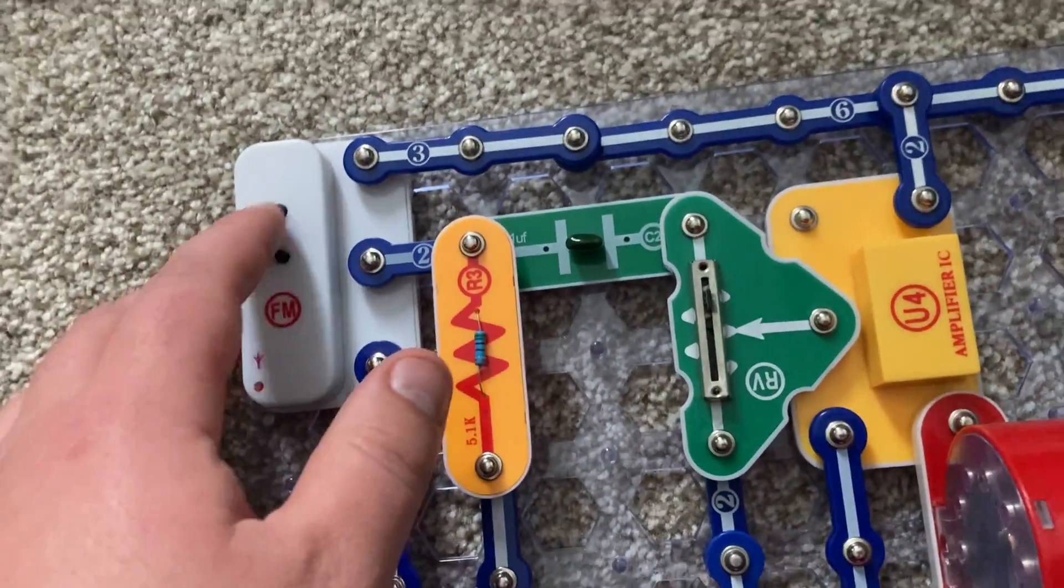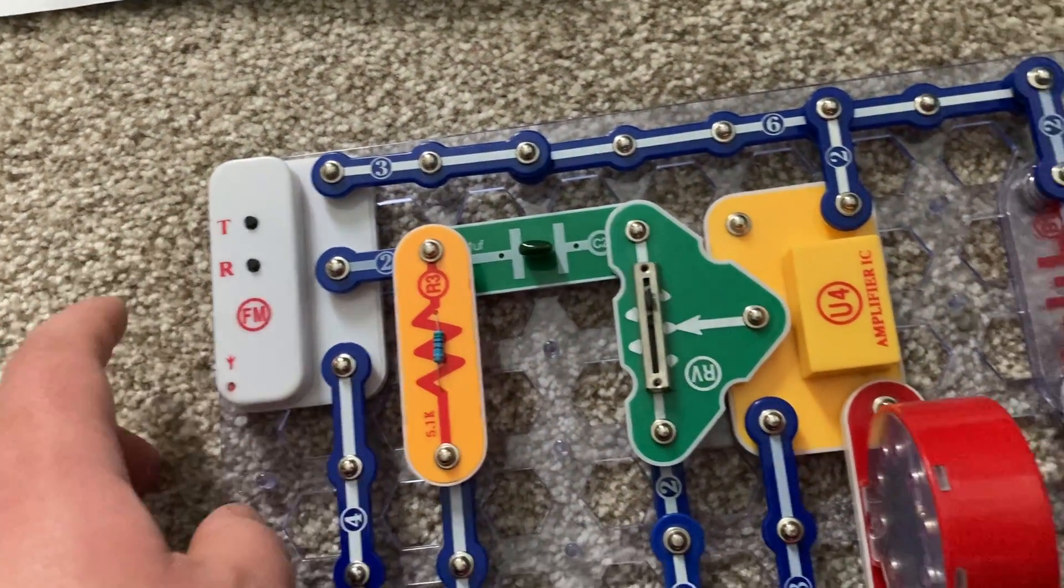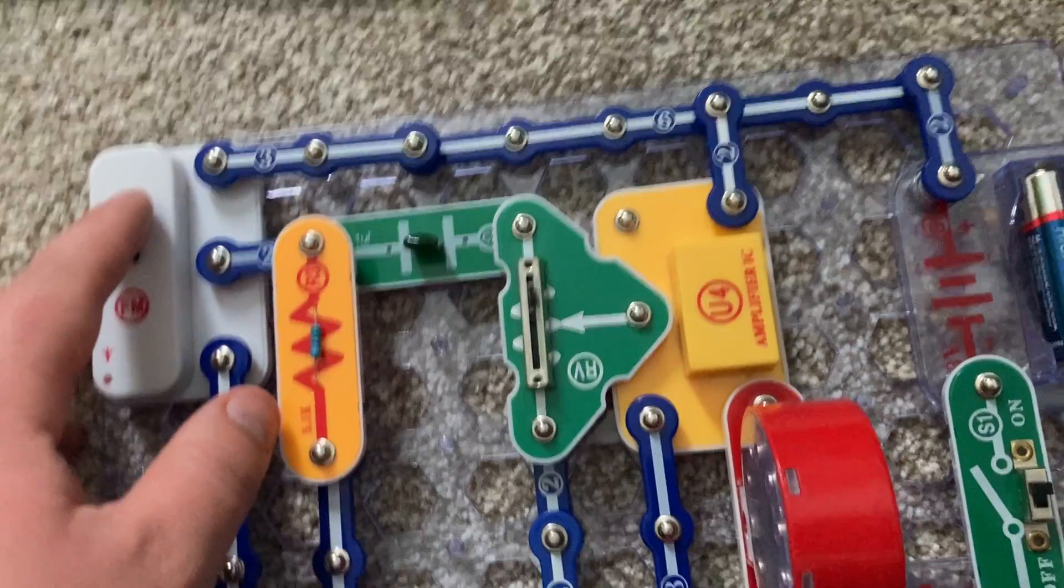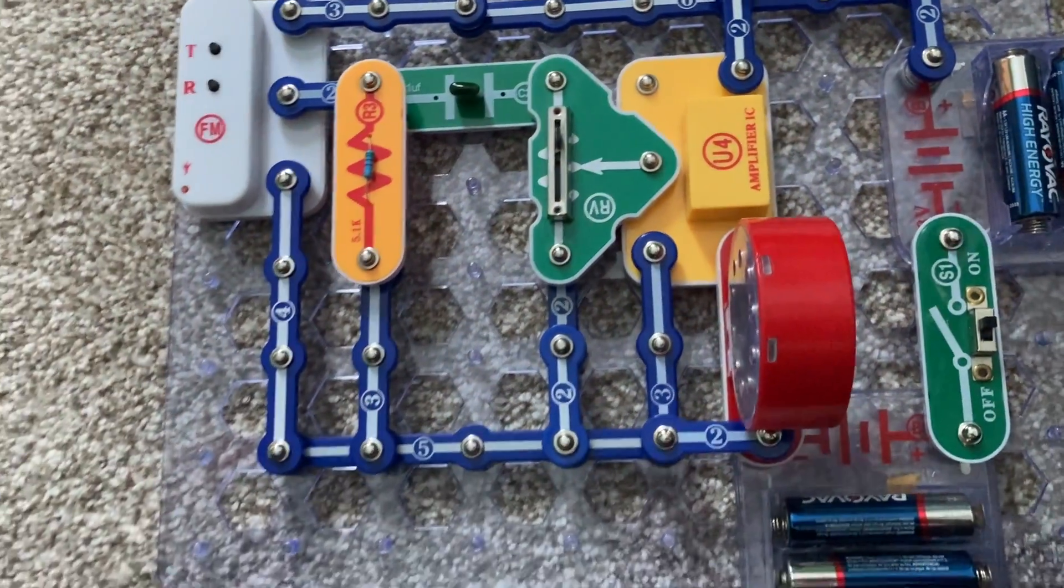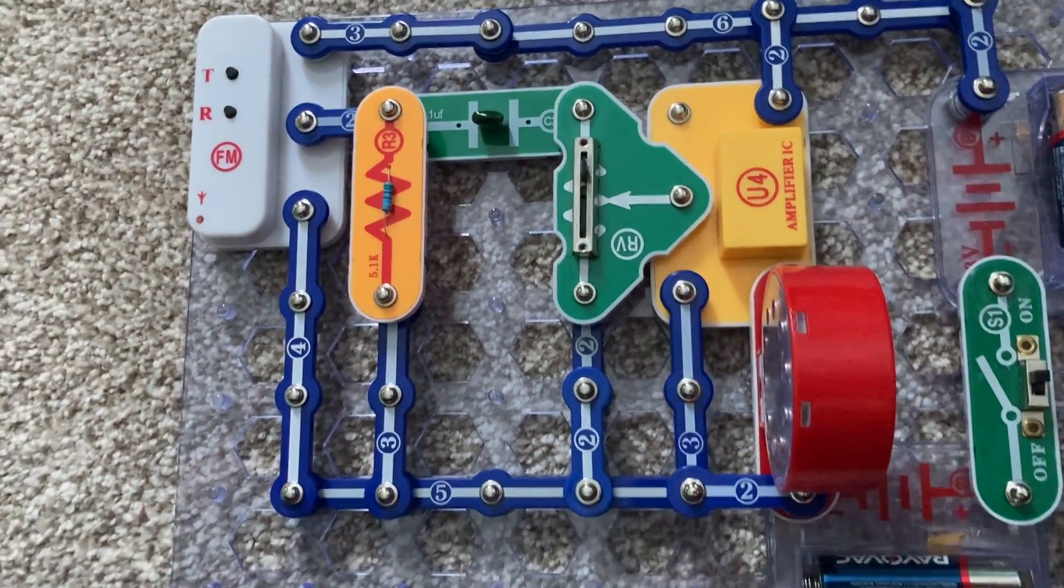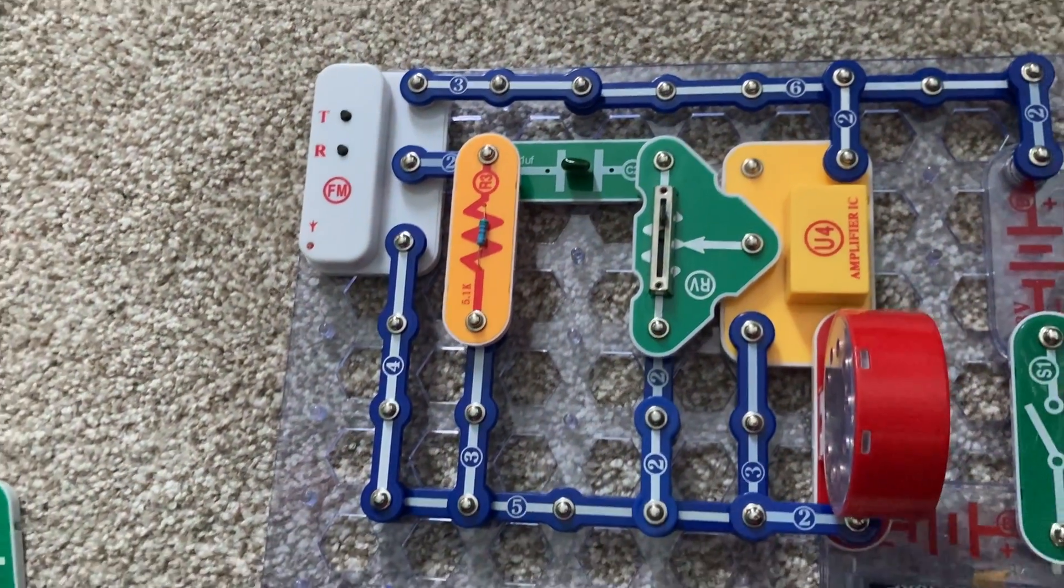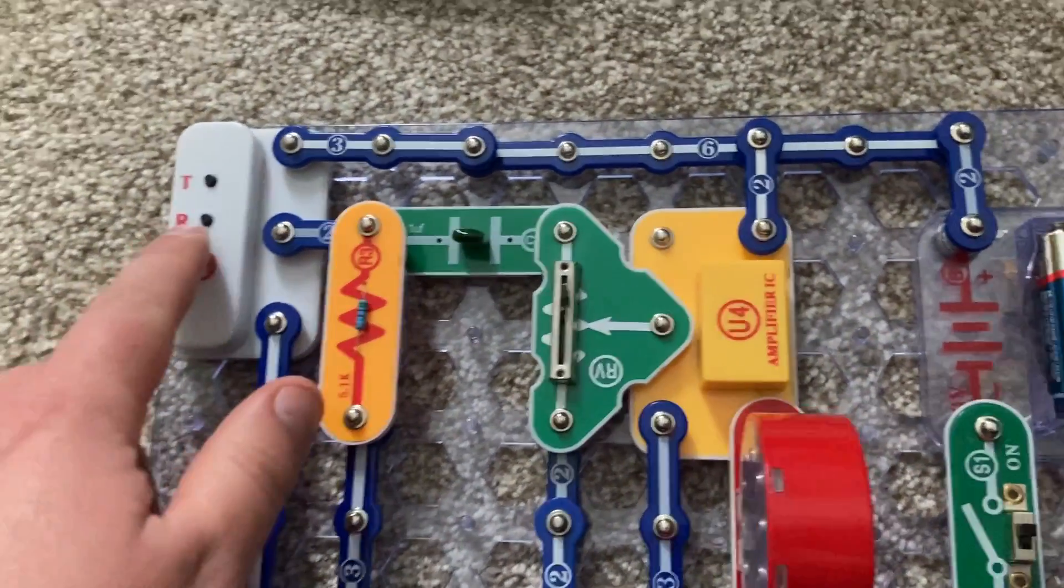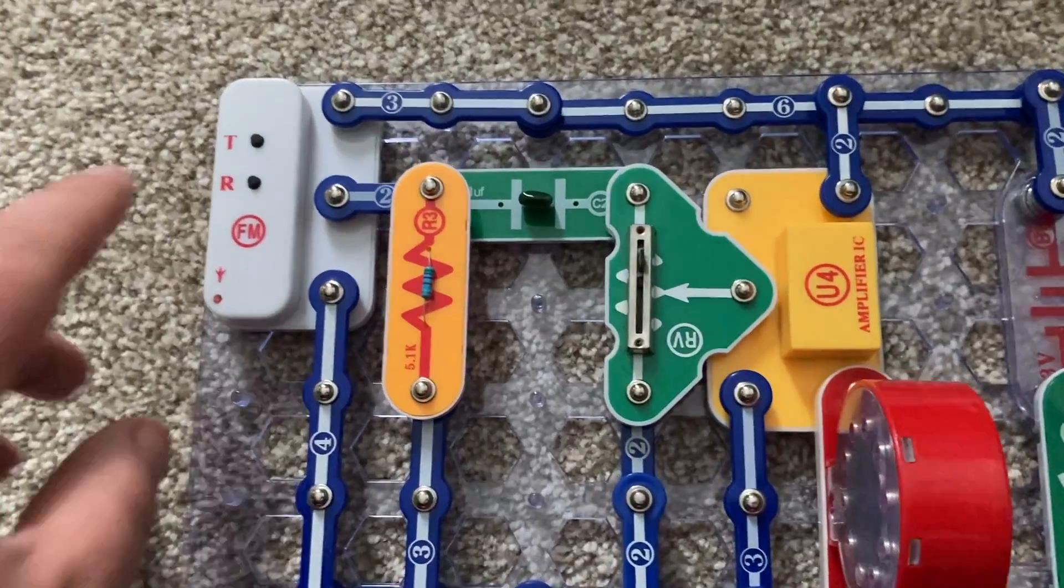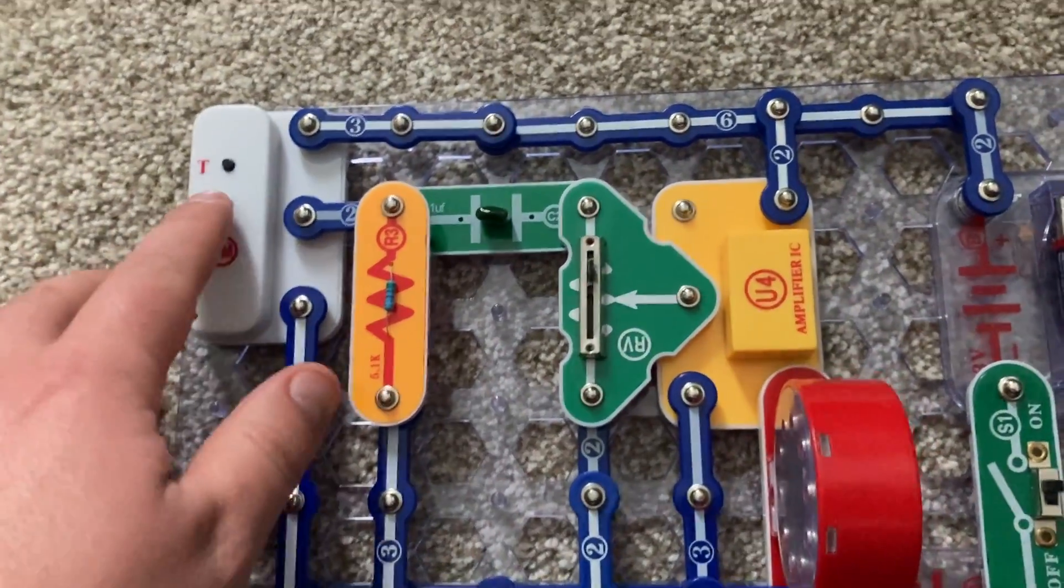The T button on the FM module is used to cycle through the stations, and the range for the module is 88 to 108 MHz. You can reset it to the lowest frequency by hitting the R button.